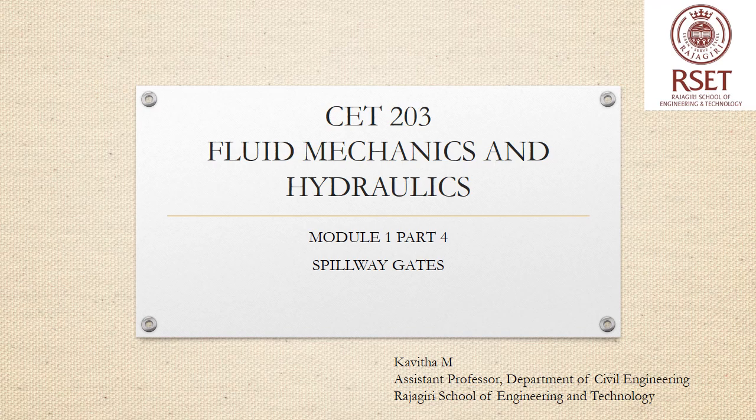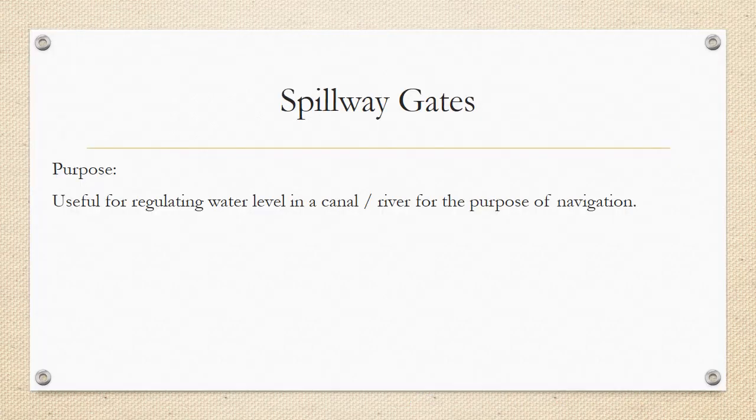In the previous lectures on Module 1, we have discussed about the different forces or the different ways in which pressure force can act on a body — when the body is in the vertical position, horizontal position, or inclined position. Spillway gates are an application of all the concepts we've studied, and it's a real-life example of hydrostatic forces on surfaces.